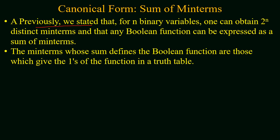For n binary variables, one can have 2^n distinct combinations of minterms, and we can express any boolean function as a sum of minterms. The minterms whose sum defines the boolean function are those which give 1s of the function in a truth table — minterms are those terms for which the binary combination gives an output of 1. Adding all these minterms gives a boolean function known as the sum of minterms.